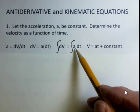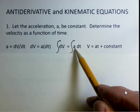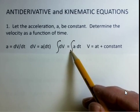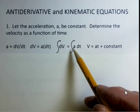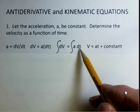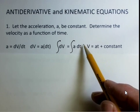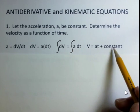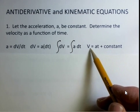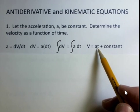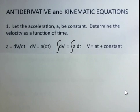Then the indefinite integration of a dt, a is a constant, so it can be taken out of the antiderivative operation. And the antiderivative dt provides us with a t plus a constant. The two constants I'm lumping together to just write constant here. So we have our final velocity is equal to acceleration multiplied by time plus some constant.